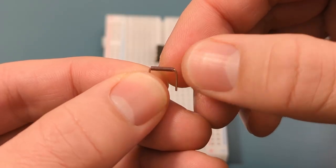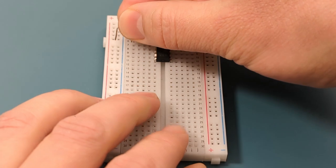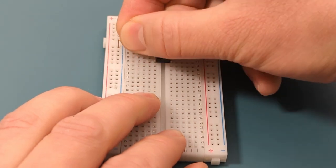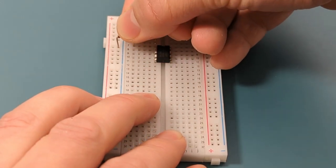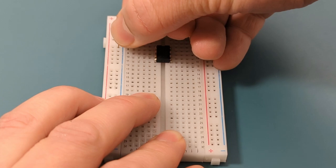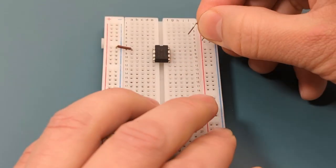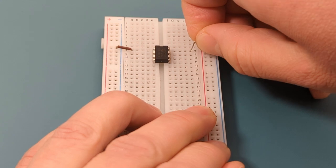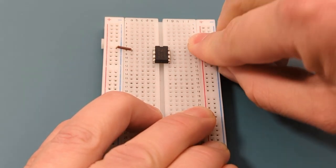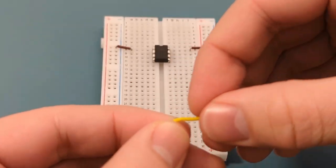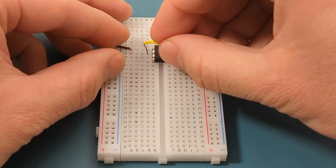A jumper wire connects pin one or ground to the negative rail. A jumper wire connects pin eight or VCC to the positive rail. Use a jumper wire to connect pin two or trigger to pin six or threshold.